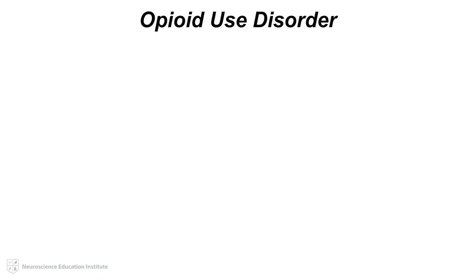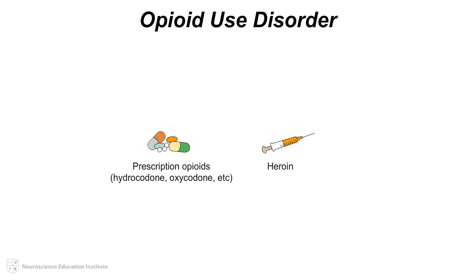With over 11 million individuals misusing opioids, including prescription opioids such as hydrocodone and oxycodone, and illicit opioids such as heroin, and alarming rates of opioid overdose, opioid use disorder has approached epidemic proportions.